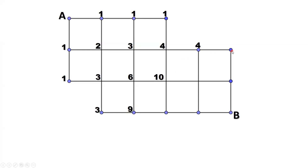How about this point? Zero plus four equals four. This point is four plus ten equals fourteen. This point is ten plus nine equals nineteen. Nineteen, fourteen. This point should be four plus fourteen equals eighteen. This point should be four plus fourteen equals eighteen. This point should be thirty-three. The last point — the final answer should be eighteen plus thirty-three, which is fifty-one. Fifty-one is the answer.